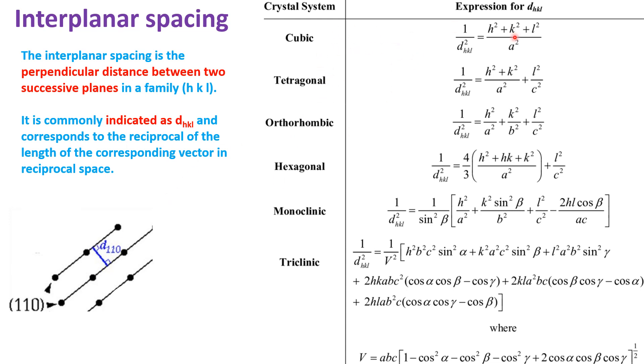For different crystal systems, we can see that for cubic, tetragonal, orthorhombic, and hexagonal, the value of d_HKL depends on HKL and the lattice parameters a, b, c. From here we can find out the interplanar spacing.